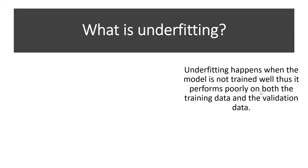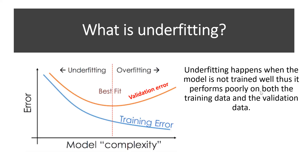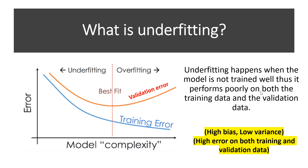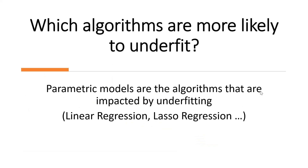What is underfitting? Underfitting happens when the model is not trained well, thus it performs poorly on both the training data and the validation set. We have a high error on both the validation set and the training set, which means we have high bias and low variance. The algorithms more likely to underfit are parametric models like linear regression and lasso regression.